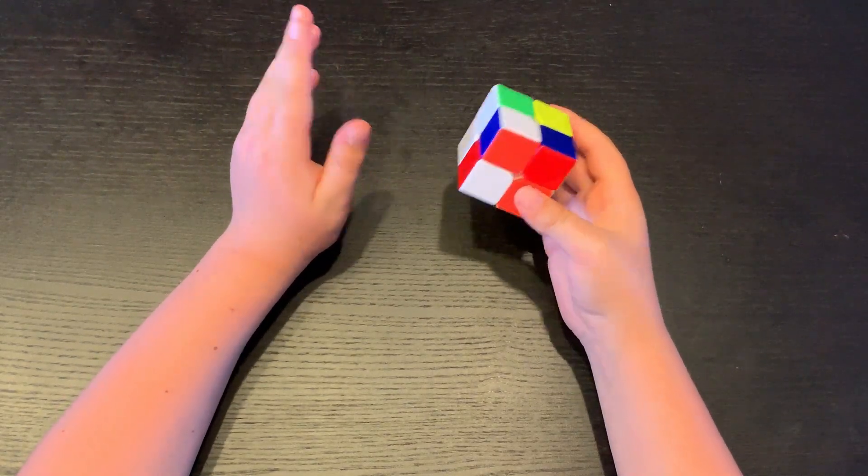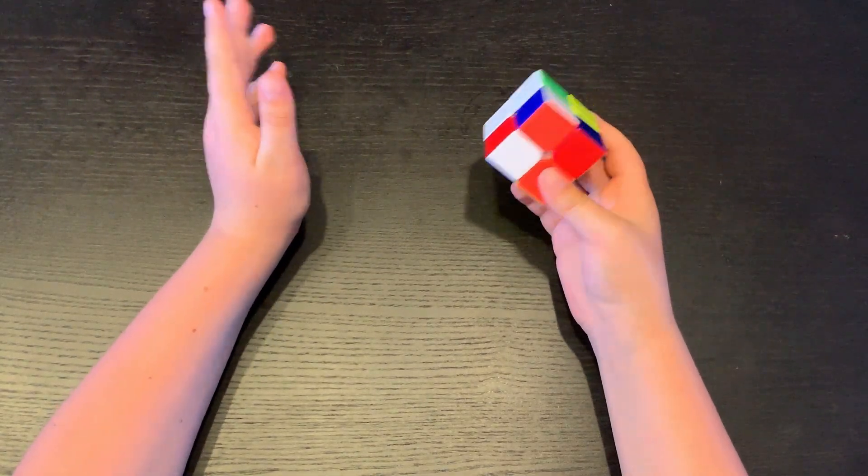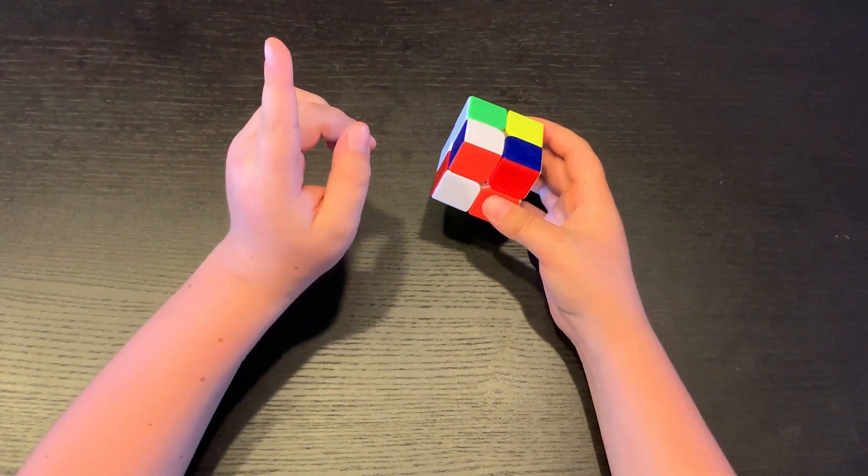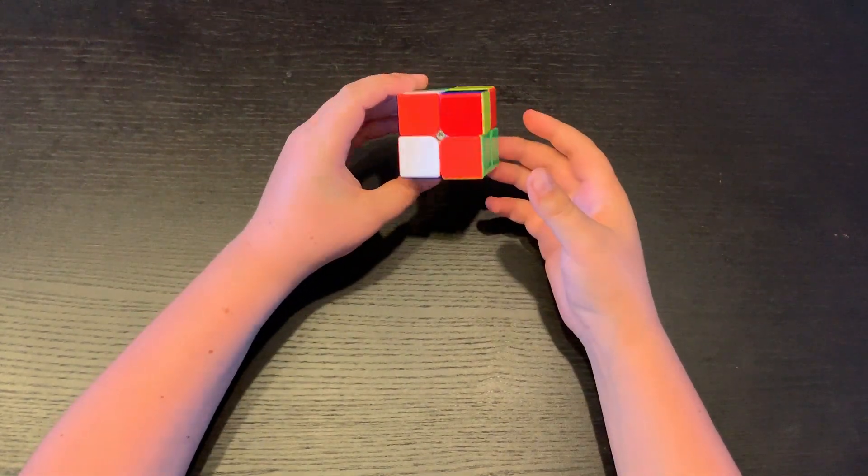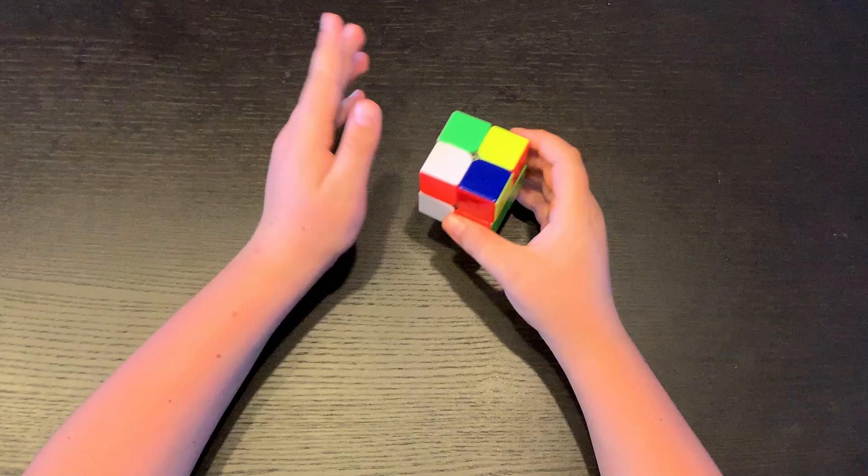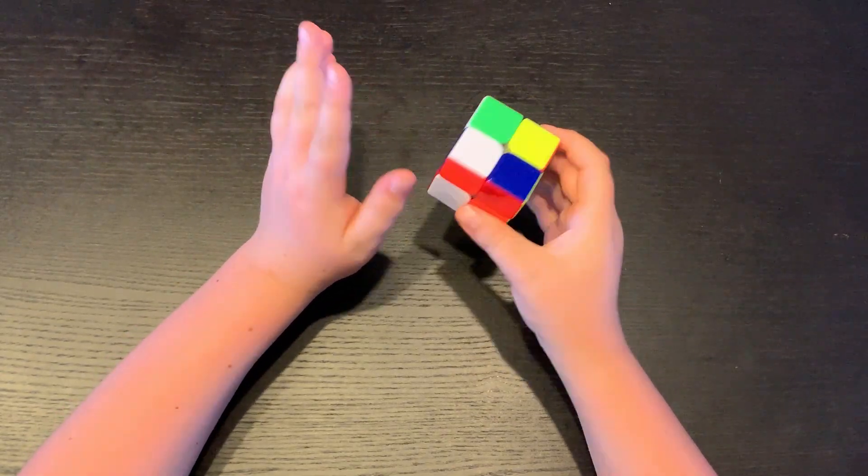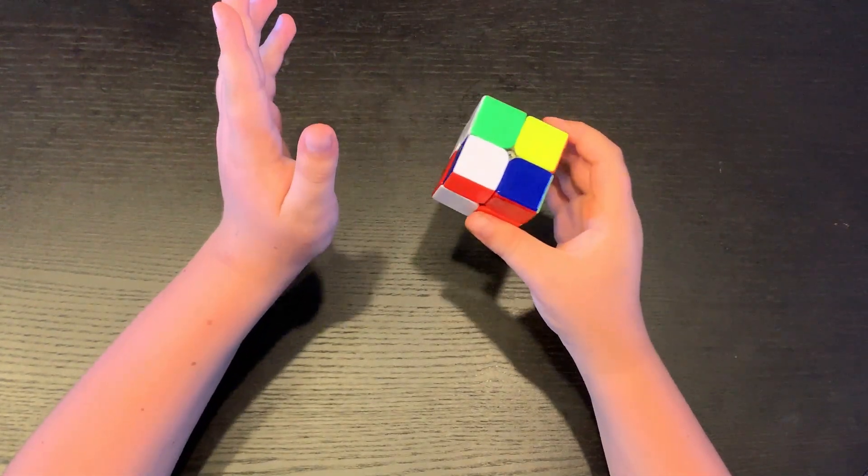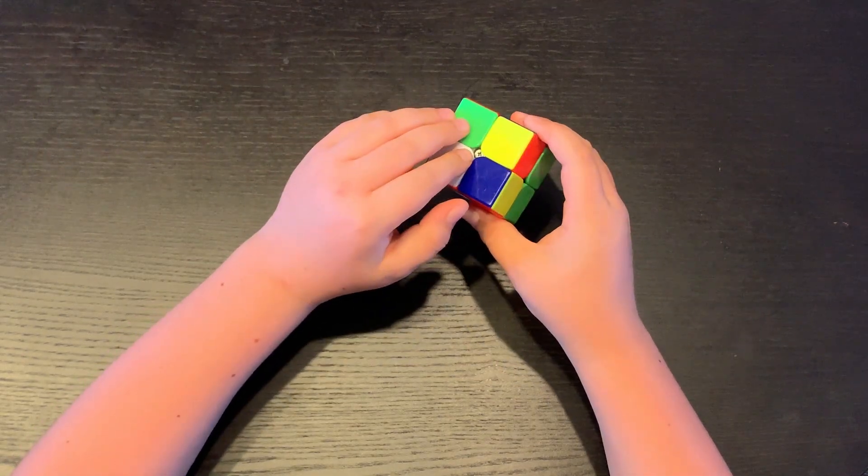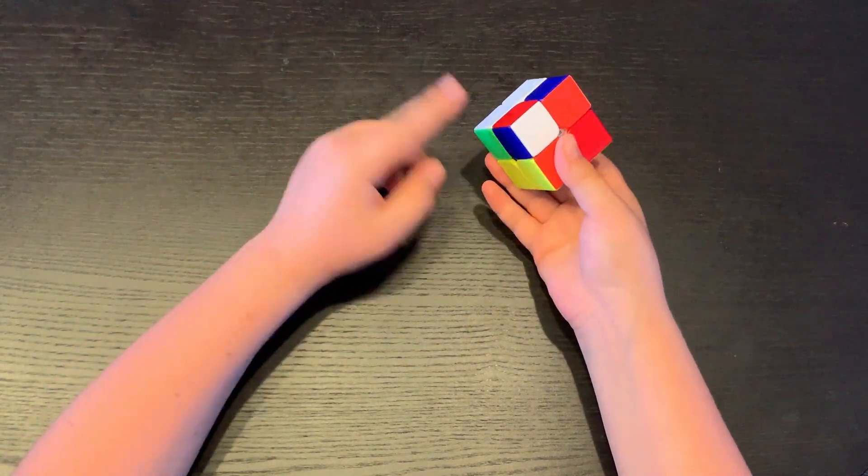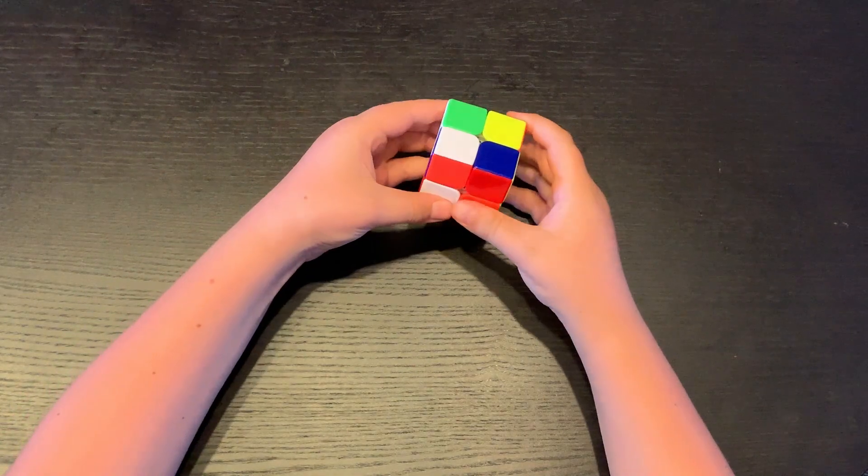But that is not correct because I'll tell you a story right now. When this 2x2 came like ages ago, maybe like six months ago, my brother said that the 2x2s are easy. What do you need to do with them? Four corners, that's it.